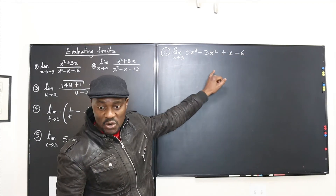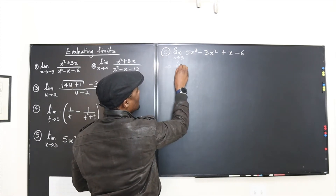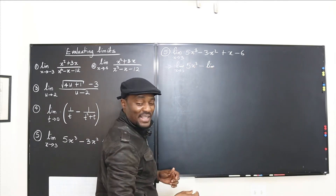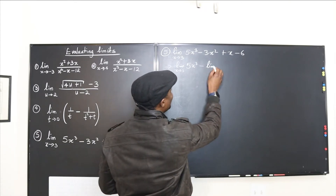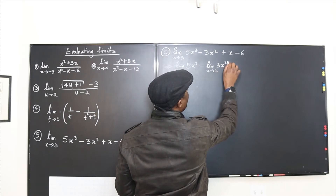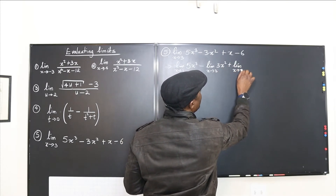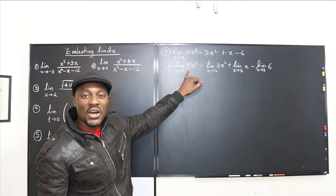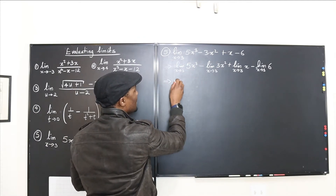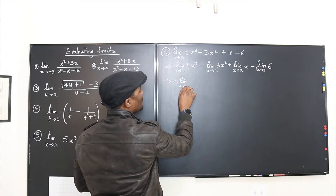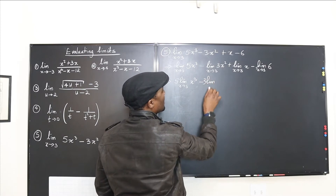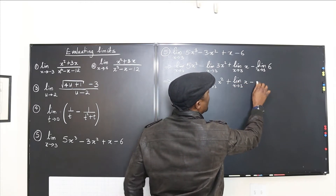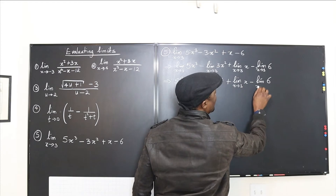If I apply the limit law to this, it simply says this is the same as the limit as x goes to three of five x cubed, minus the limit of three x squared, plus the limit of x, minus the limit of six. Because constants can always be moved out, you get five times the limit of x cubed minus three times the limit of x squared, plus the limit of x, minus the limit of the constant six.